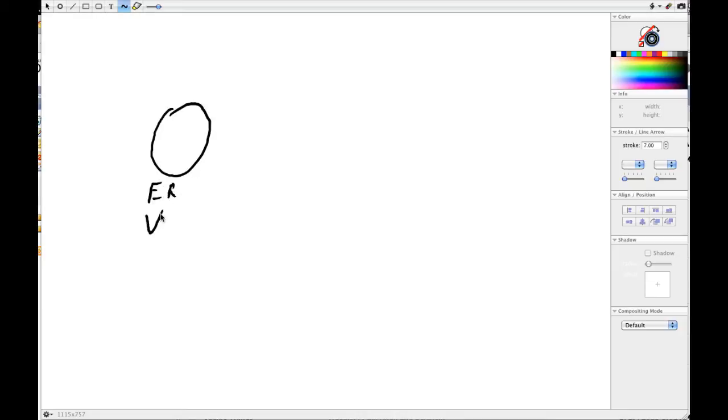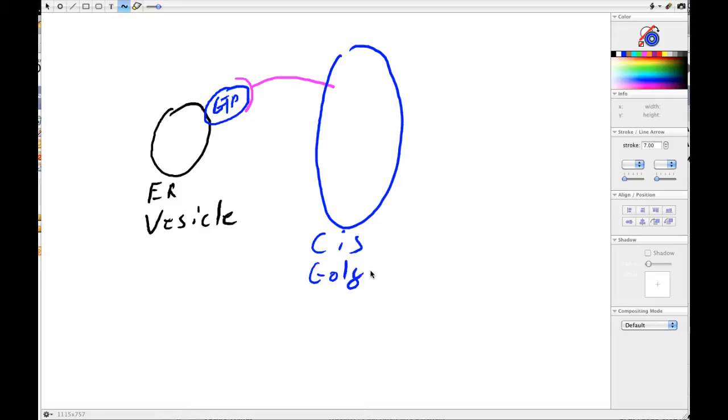You have the ER vesicle. We've got the RAB GTPase interacting with the RAB effector that's on the cis-Golgi. So that interaction brings things together, and then the idea is, and I'm not doing this to scale, is that if that's a good pairing and the snares recognize each other, what you end up with are the snares end up pairing with each other and wrapping around each other.